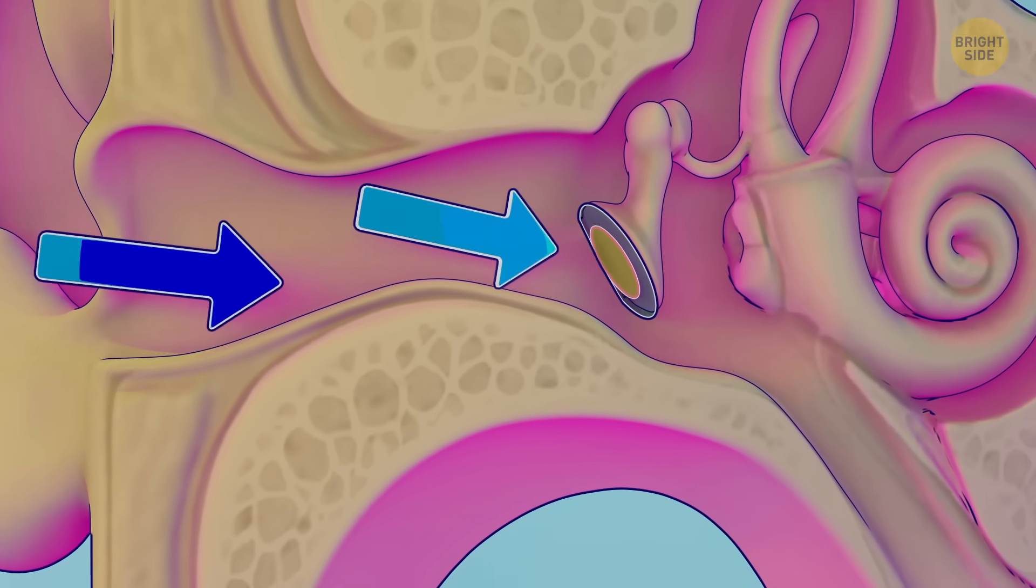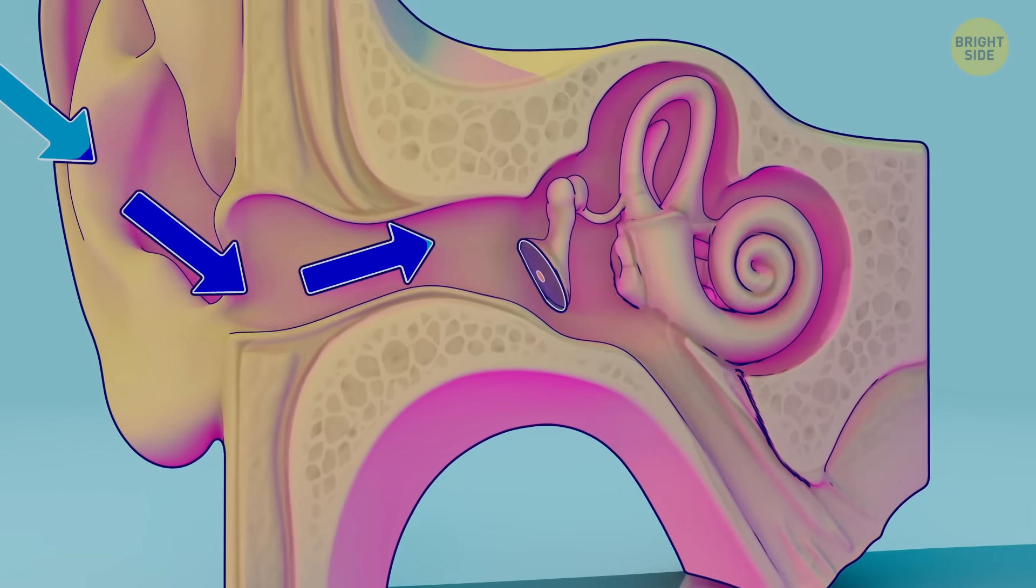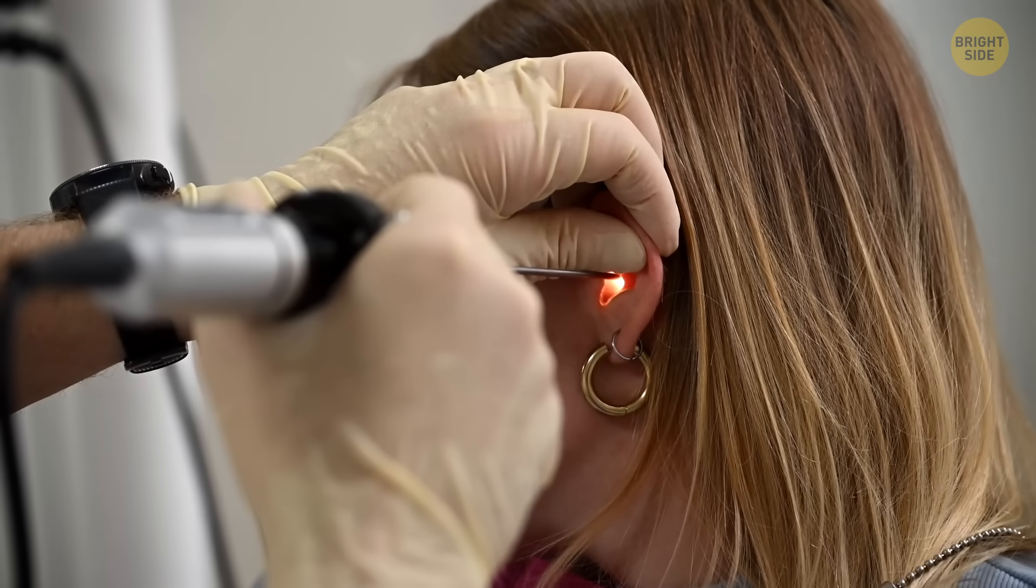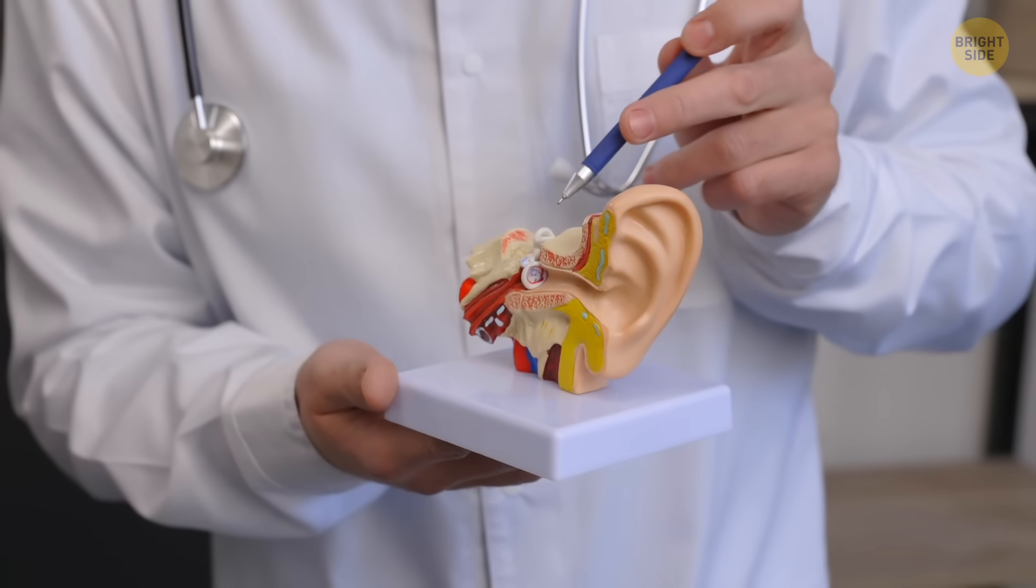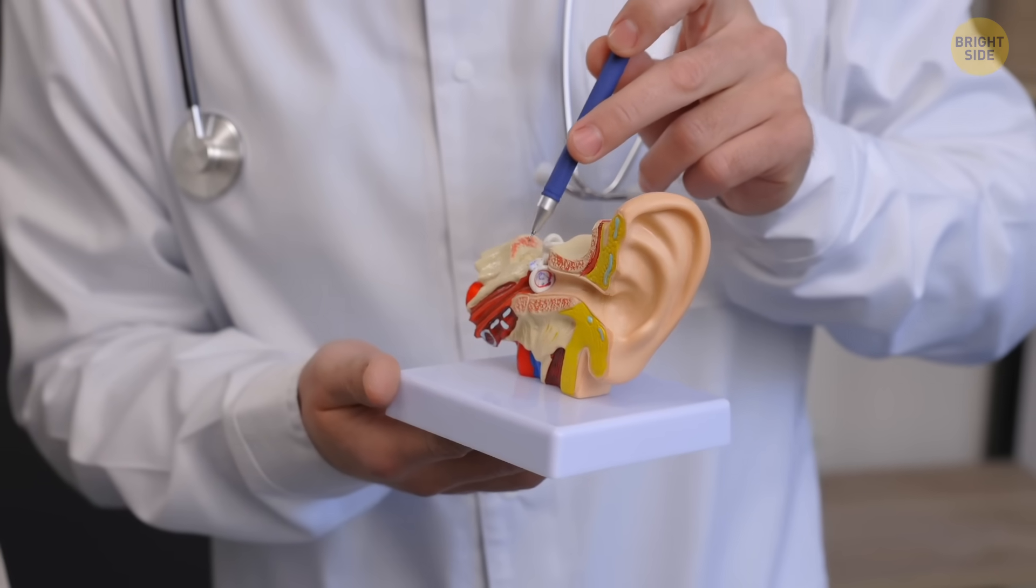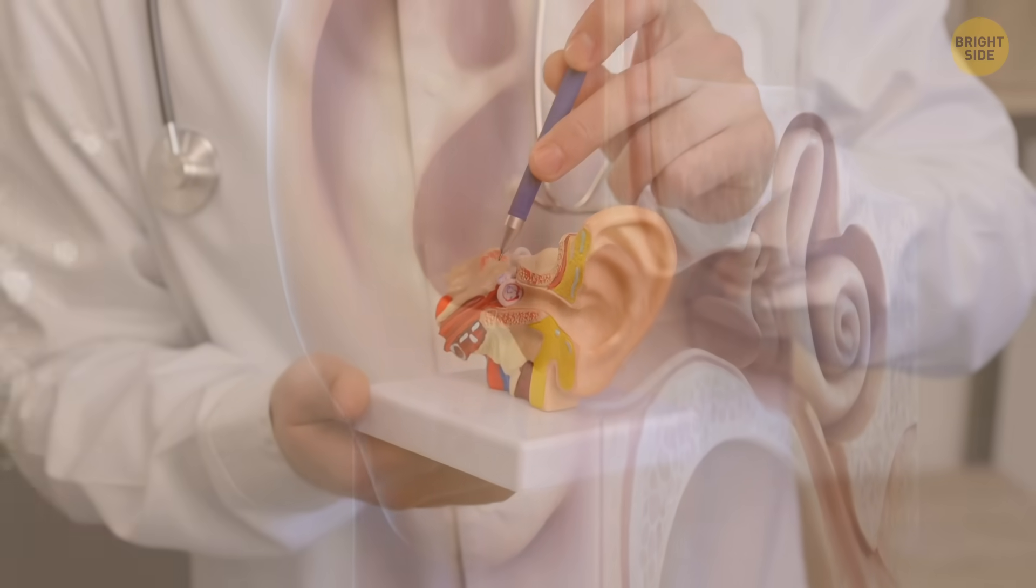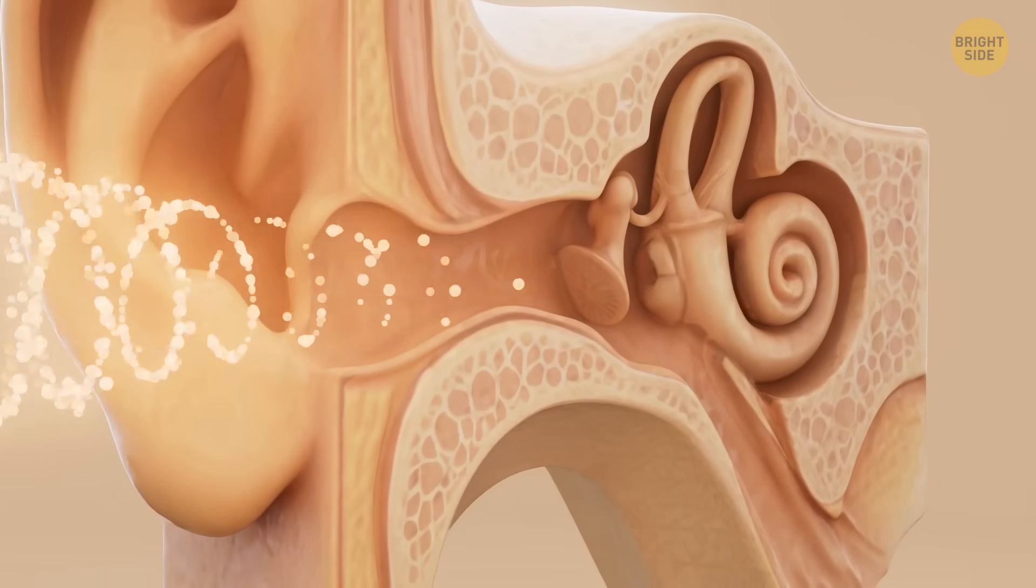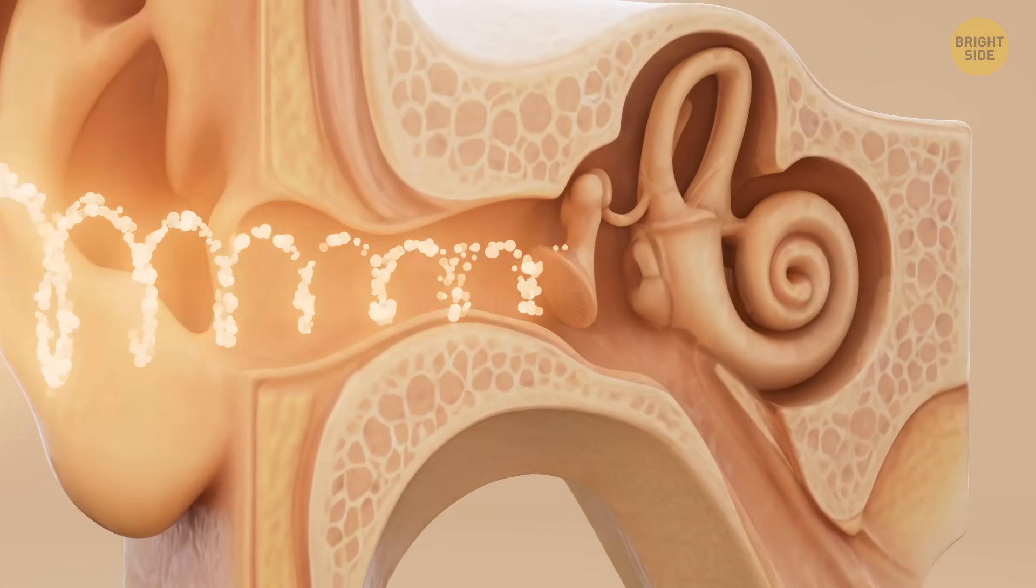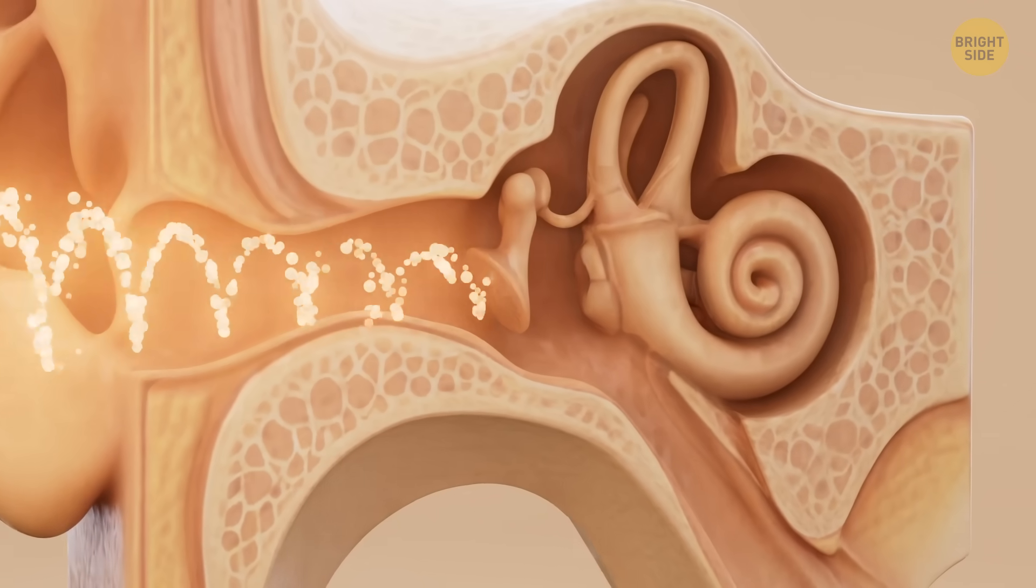Scientists have also found that the human ear itself has hidden modes. Researchers at Yale University were just trying to figure out how our ears can pick up super-quiet sounds, and in the process, they discovered a hidden way that the ear might handle low-frequency sounds. You know, those deep, rumbling ones? It helps us hear better without getting overwhelmed by noise.